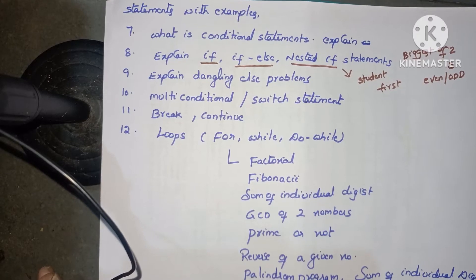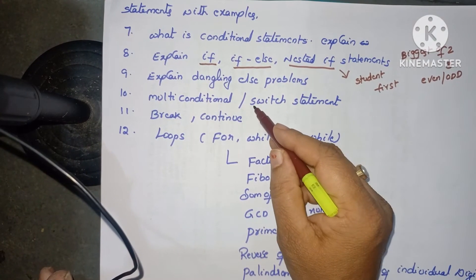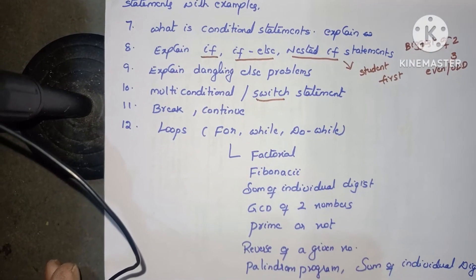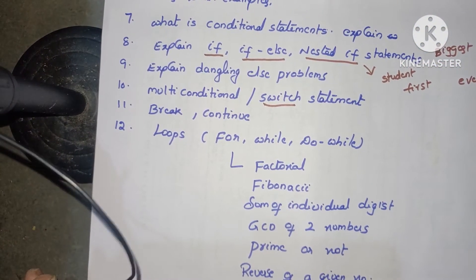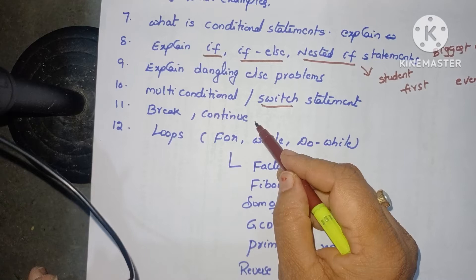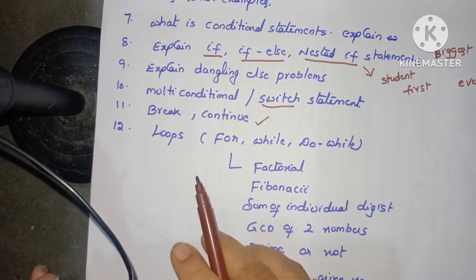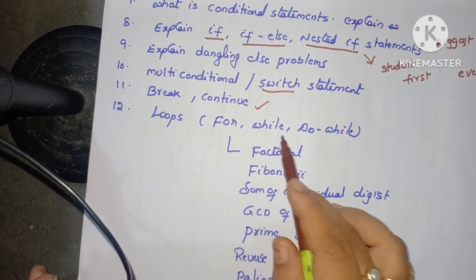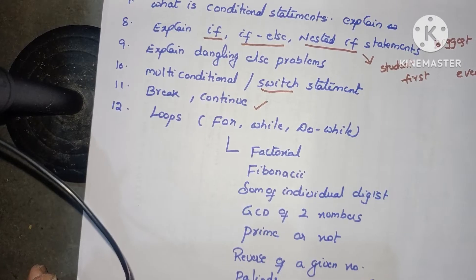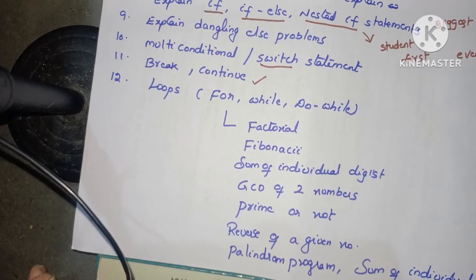Next: 'Explain the dangling else problem.' Next: multi-conditional statement or switch statement — 'What is a switch statement?' or 'Explain the multi-conditional statement' — both are the same. Then: 'Explain break and continue statements with example programs.' Next: 'What is a loop?' and 'Explain the different types of loops' — for loop, while loop, do-while — each explained with syntax and example programs.